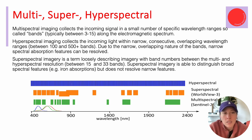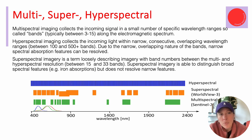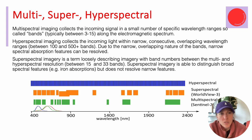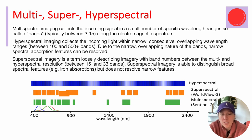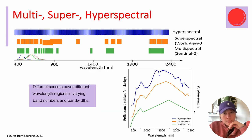There is a standard for hyperspectral terminology. The IEEE Standard Association set up a standard in 2018 covering the wavelength range between 250 to 2,500 nanometers, and they consider that if it exceeds 32 bands, it's hyperspectral. Superspectral is more of a loose terminology — I usually refer to it when it's between 15 and 33 bands. Worldview-3, a commercial satellite, would fall under that category.